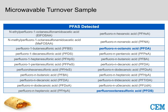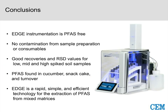Overall, this is a beginning study working with challenging substances. As we get into food with all these different components, extraction becomes harder. But we were able to extract these compounds at the beginning level, and the Edge is going to be very applicable to all of these samples and beyond. In conclusion: Edge instrumentation is PFAS-free with no contamination from sample preparation or consumables. For soil, we got good recoveries and RSD values at low, mid, and high spike. We found PFAS in cucumber, snack cake, and turnover. The Edge is a rapid, simple, and efficient technology for extraction of PFAS from mixed matrices.